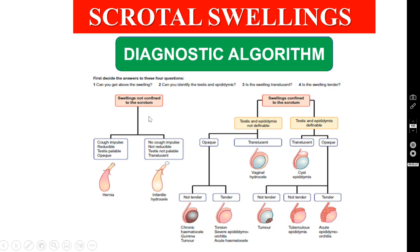Getting above the swelling will differentiate whether it is a purely scrotal or inguino-scrotal swelling. If you are able to get above the swelling, it is a scrotal swelling. If you are unable to get above the swelling, it is an inguino-scrotal swelling. If the patient also has a cough impulse, it is completely reducible, testis is palpable separately, and the swelling is opaque — we are dealing with indirect inguinal hernia.